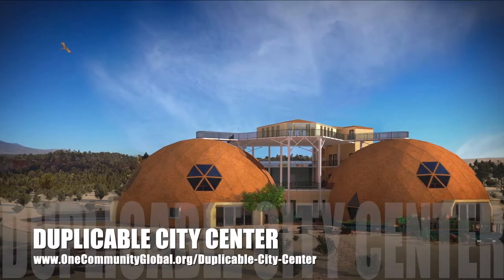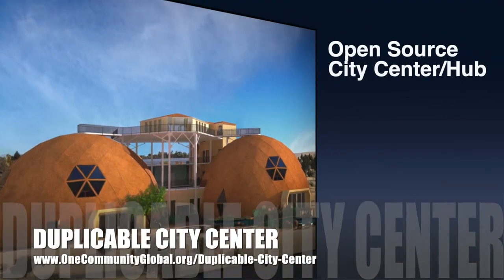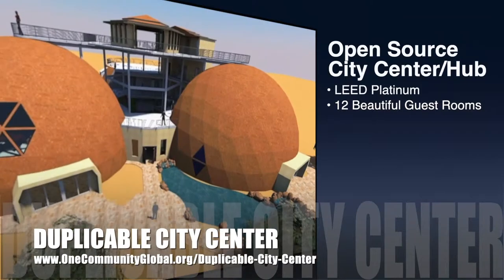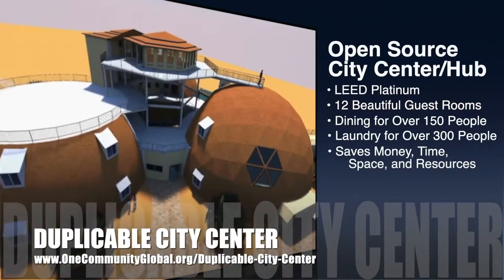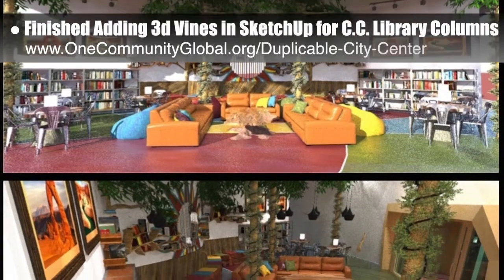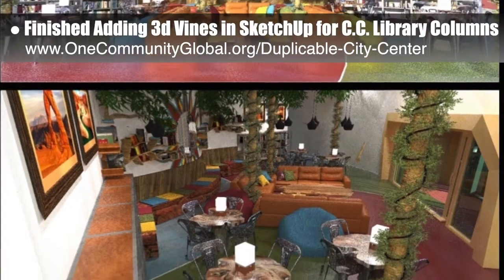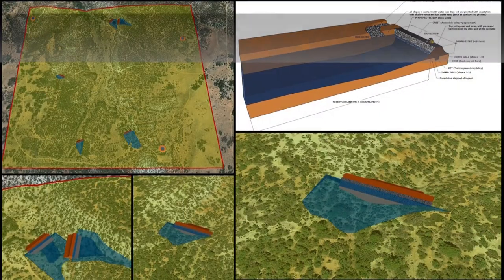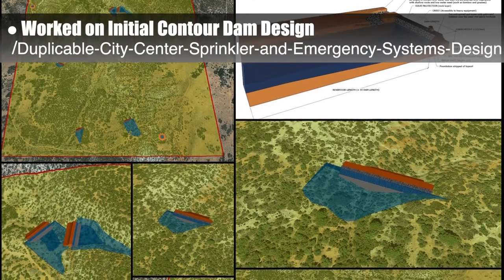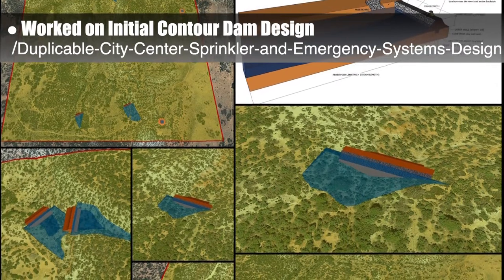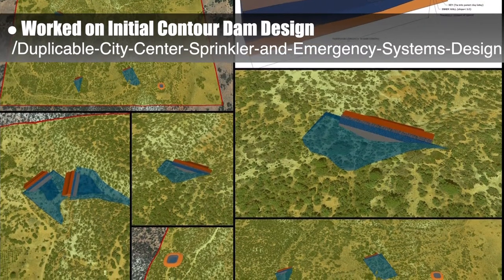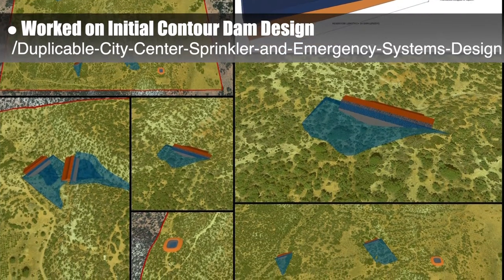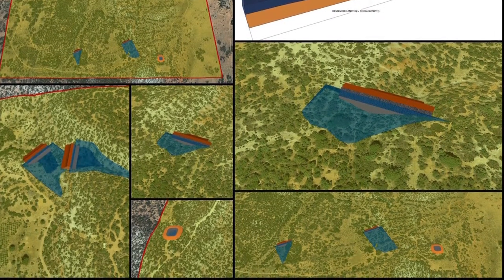One Community is also creating an open-source duplicable city center. It is designed to be LEED Platinum certified, provide 12 guest rooms, dining for over 150 people, and laundry and recreation space for over 300 people, all while saving money, time, space, and resources. This week, the core team finished adding 3D vines in SketchUp for the city center library columns, then modified the overhead foliage to produce draft renders. The core team also continued with week 10 of research into lake and water retention landscape creation as an alternative water source — this week's focus was initial contour dam design and finding a suitable location in the actual property imports from Google Earth.